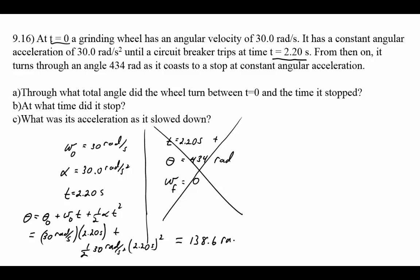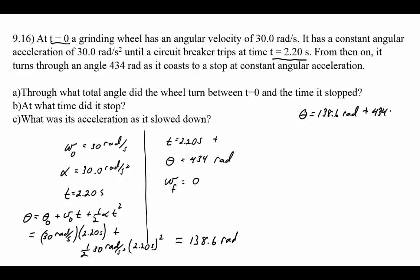That gives 138.6 radians for part one. The total angle through which the wheel goes is 138.6 radians plus 434 radians from part two, giving a total angle of 572.6 radians. Given three significant figures, that rounds to 573 radians.